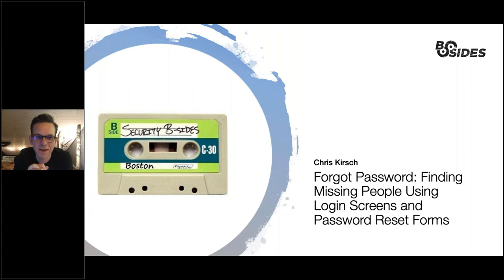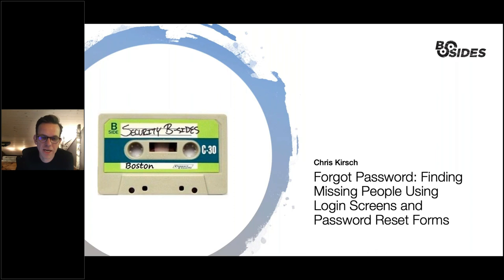Today I'm going to talk about something that might not look like it really belongs together: password reset forms and missing people. But bear with me and I'm going to walk you through that a little bit. There's also some good tips for red teamers at the end and some tips for blue teamers, if you're not just into OSINT investigations — hopefully it's going to be an enjoyable talk for your general interest.